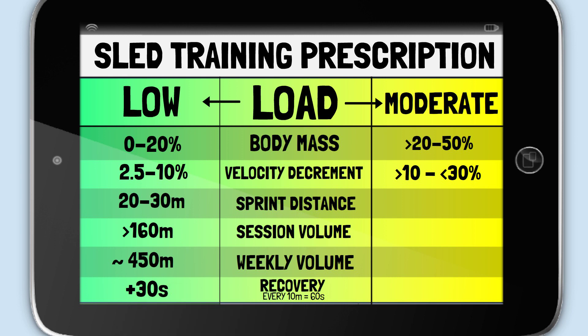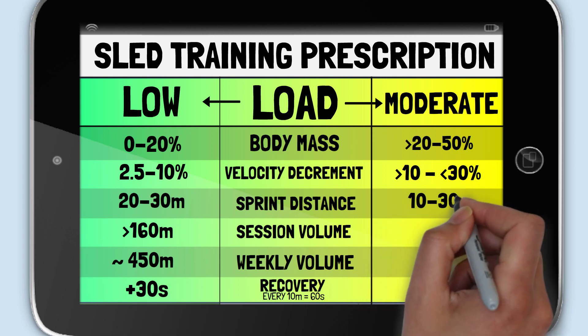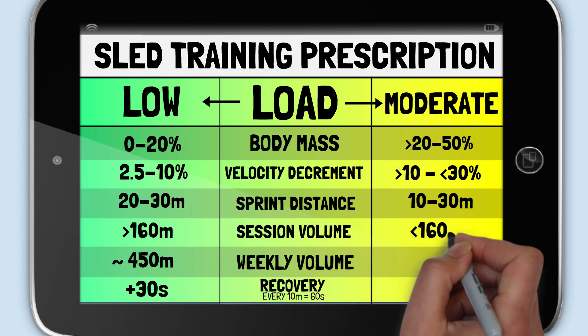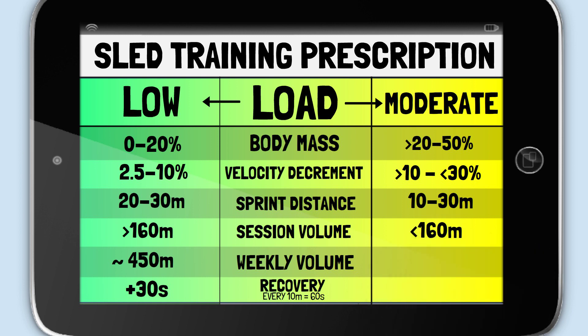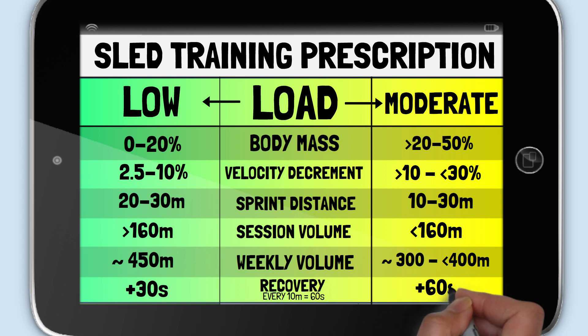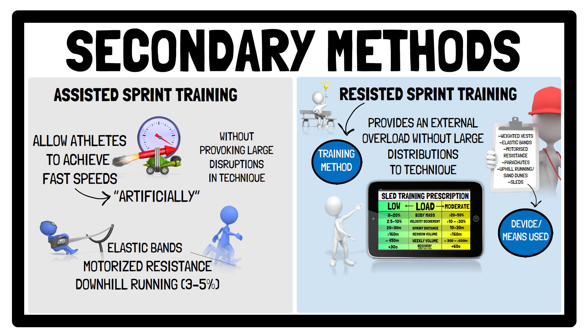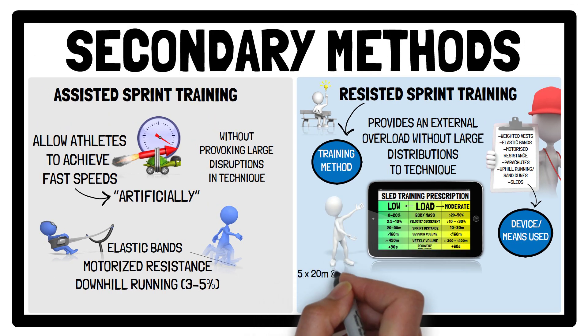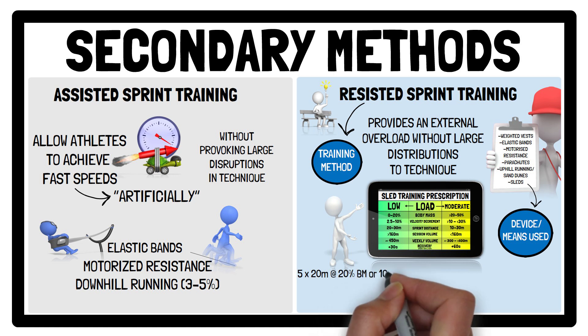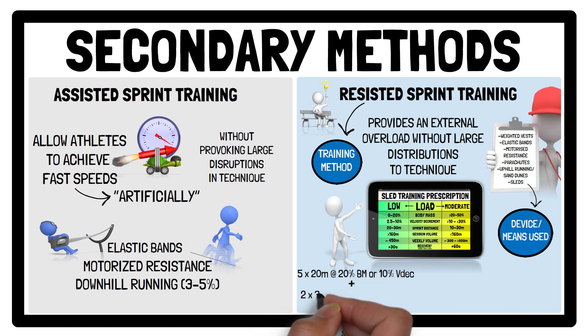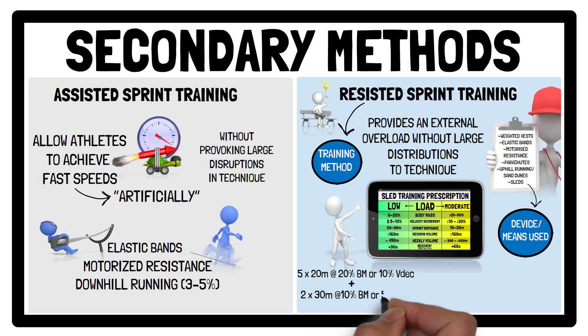For moderate sled loads, a sprint distance between 10–30 metres and a session volume of less than 160 metres, with a weekly volume of between 300–400 metres, is recommended. Regarding recovery times, this should be 1 minute for every 10 metres, but with an additional 60 seconds when using moderate sled loads. A low sled load session example includes performing 5x20 metres at 20% body mass or 10% velocity decrement, as well as 2x30 metres at 10% body mass or 5% velocity decrement.